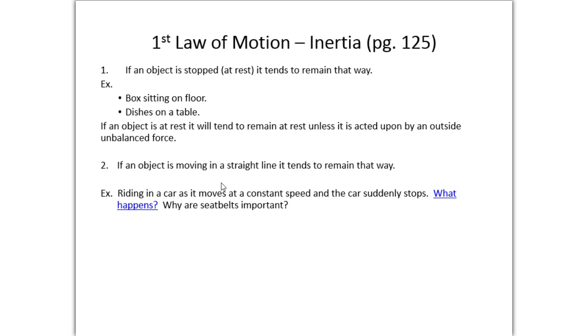Now, if an object's already moving, it wants to continue moving that way. It doesn't want to stop unless it's acted upon by another force. So that's what happens when you're in a car. If you're continuing to move forward and the car puts on the brakes, you want to continue to move forward. And that's inertia. The seatbelts are a restraining device there to keep you in the car to act against inertia.